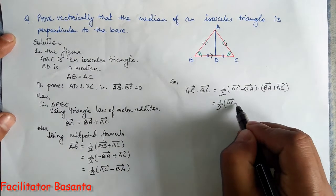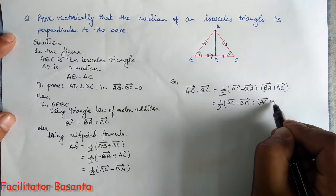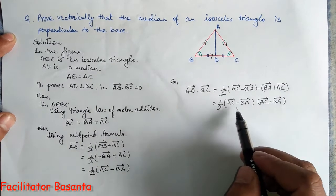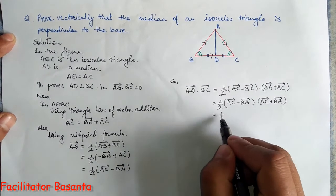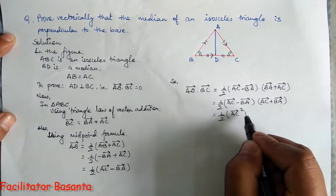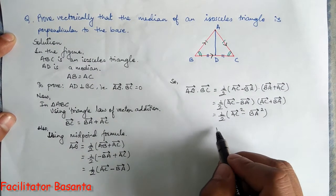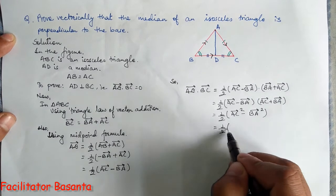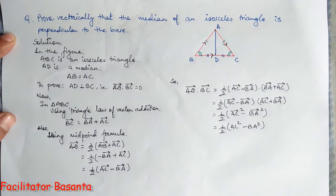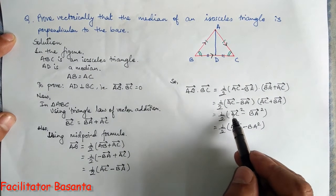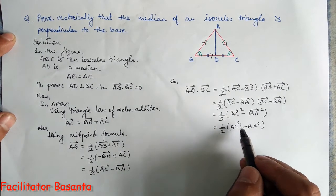Rearranging with AC at front and BA at back, we can apply the formula A minus B dot A plus B equals A squared minus B squared. So this equals one-half times AC squared minus BA squared, since a vector dotted with itself equals the square of its magnitude.